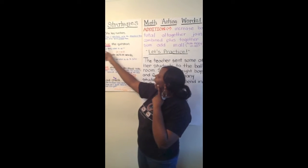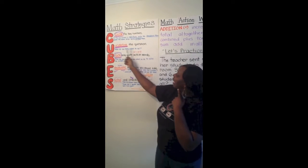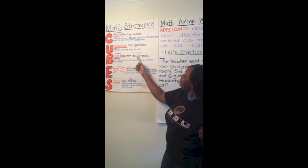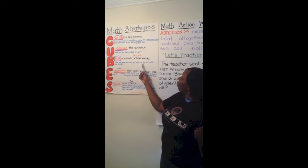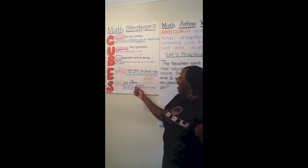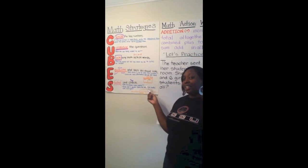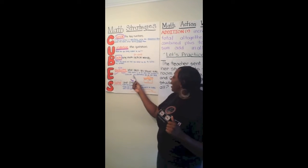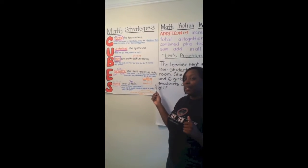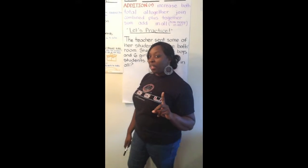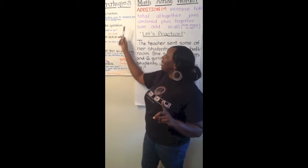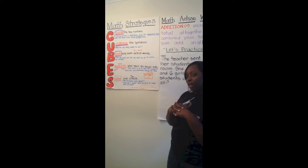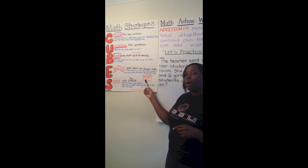After you box any math action words, we move to E — evaluate. I've circled my key numbers and underlined the question, which tells me what they're asking me to do. I've boxed the math action words, and these keywords tell me what to do to solve the problem. Now I evaluate what steps to take, eliminate any information I don't need, and use our part-part-whole map using the key numbers I've circled.